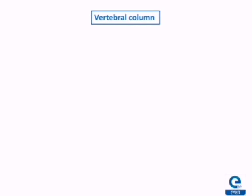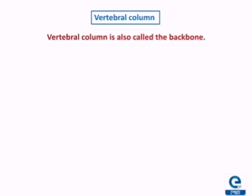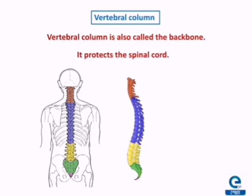Next, we are going to learn about the vertebral column, also known as the backbone. It protects the spinal cord. Thus, the skeleton which encloses the spinal cord is known as the vertebral column. Each bone of the vertebral column is known as a vertebra, and in plural it is known as vertebrae. According to the regions, the vertebral column is divided into 5 groups.